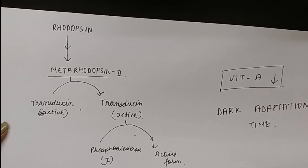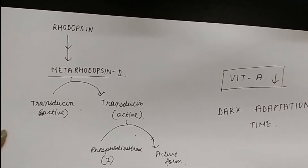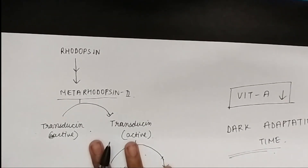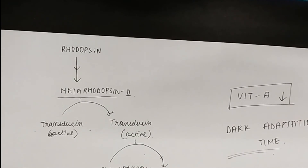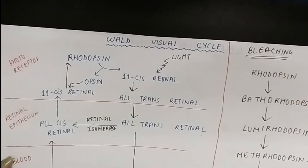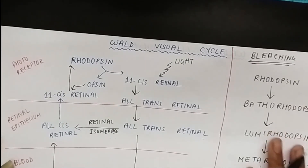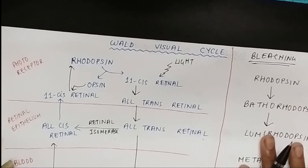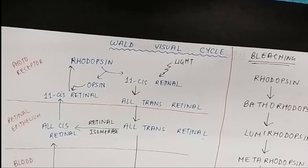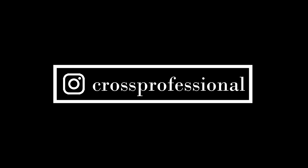Dark adaptation time may be an important exam question — they may ask why temporary blindness occurs when entering a dark room after bright light. I hope everything covered in this video — the cGMP pathway, dark adaptation time, the Wald Visual Cycle, and the bleaching process — is clear to you. Please share, like, and comment below, subscribe to my channel, and follow my Instagram page for all the drawings. Thank you for watching.